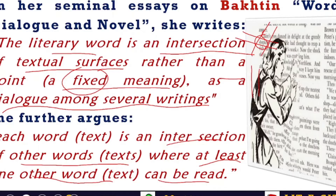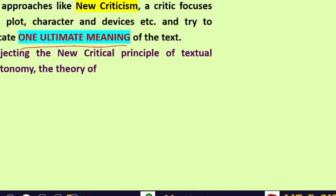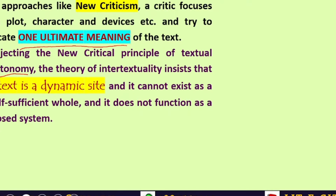In approaches like New Criticism, a critic focuses on plot, character, and device, with the main purpose of locating one ultimate meaning of the text. This is the traditional approach where we try to find one final meaning. But rejecting this New Critical principle of textual autonomy — where each text is autonomous and governs its own meaning — the theory of intertextuality insists that a text is a dynamic site where meaning is constantly fluctuating. It cannot exist as a self-sufficient or closed system; in other words, a text is basically an open system.